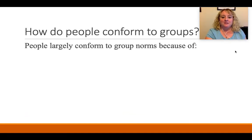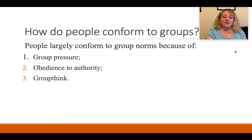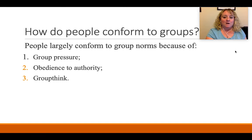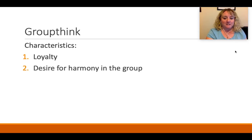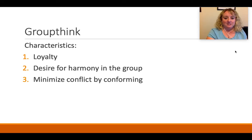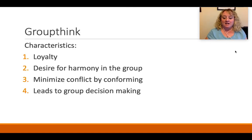So how do people conform to groups? There are a few reasons. First is group pressure. Second is obedience to authority — most of us have some sort of need to go along with what the rules are, because we have some sort of desire to abide by some of them. Third is groupthink, which may be one of the largest reasons why people conform. Groupthink's characteristics are loyalty to the group, a desire for harmony, and not wanting to rock the boat. You minimize conflict by conforming, which leads to group decision-making.